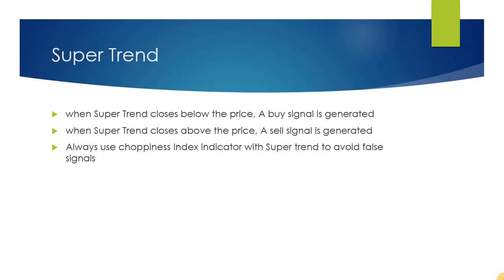The buy and sell signals are shown by green and red arrows — the green arrow is for buy and the red arrow is for sell position.